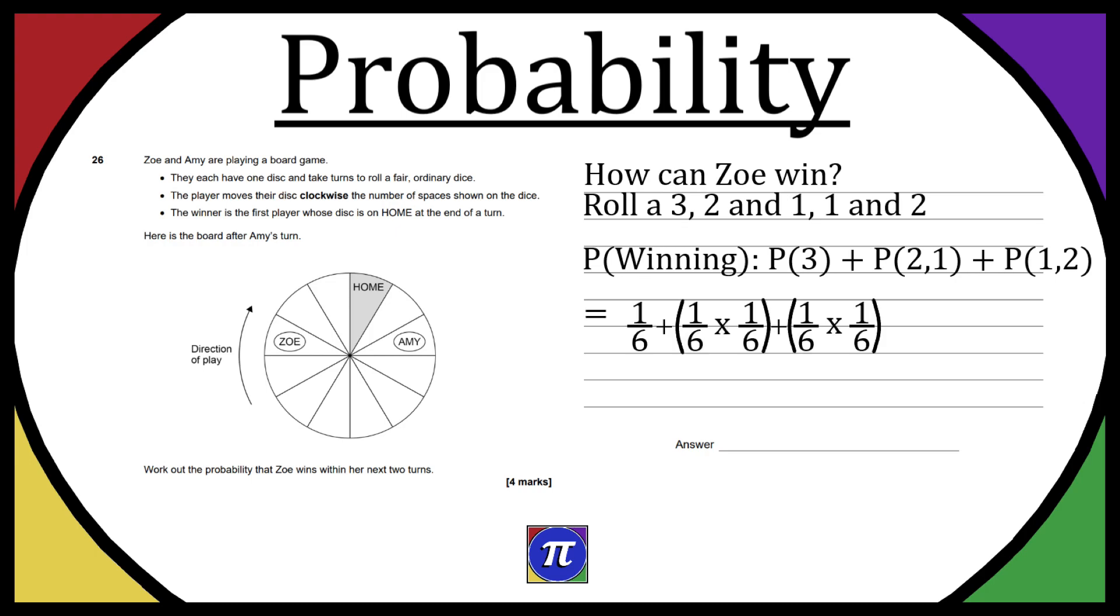When we sub in the values, the probability of a 3 is going to be 1 over 6 because it's a six-sided normal dice. Then the probability of a 2 then a 1 is going to be 1 over 6 times 1 over 6, and then the probability of 1 and 2 is 1 over 6 times 1 over 6.